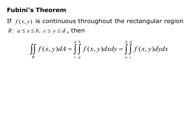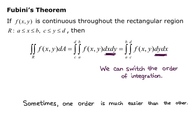Notice that in the first form we had dx dy, and in the second we have dy dx — we're evaluating with respect to the opposite variable first. In other words, we can switch the order of integration, and sometimes one order is much easier than the other. We have a couple of examples; we'll do one in this video and one in the following video, showing how switching the order can make a big difference.